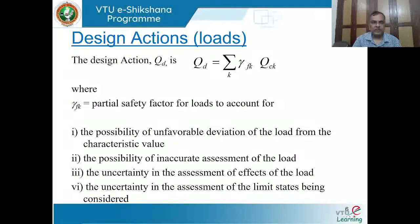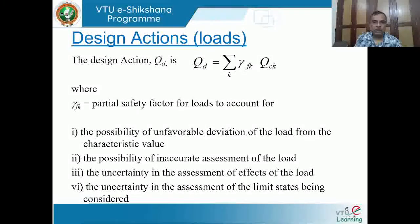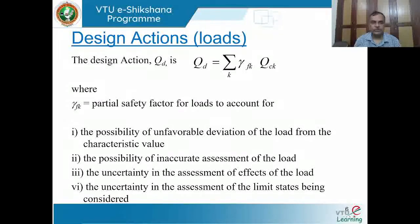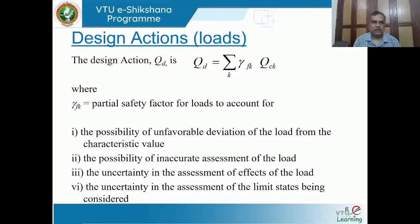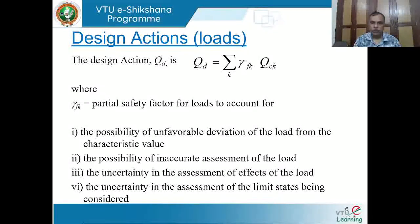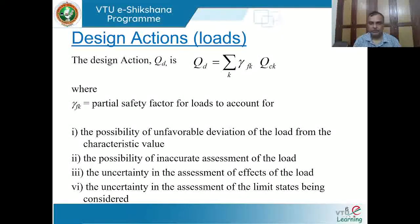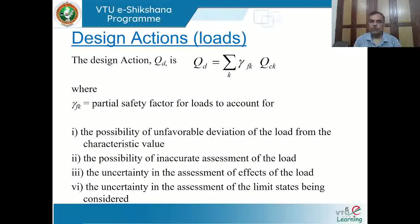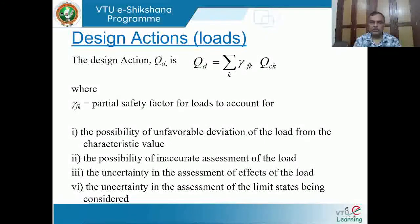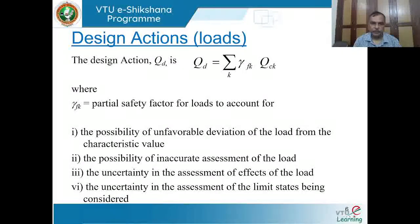Once you have the concept of characteristic loads — which are the loads discussed and made available in codes of practice — when designing a structure those characteristic loads need to be increased. That is where amplification of the load comes into picture. The amplified load used in analysis is referred to as the design load or design actions (Qd), given by: Qd = Σ(γfk × Qck), where Qck is the characteristic load obtained from codes of practice and γfk is the partial safety factor for loads.